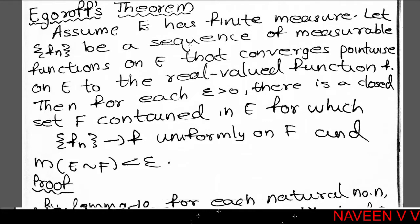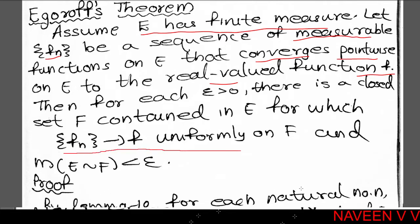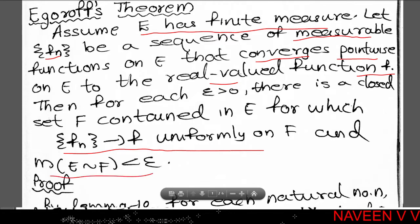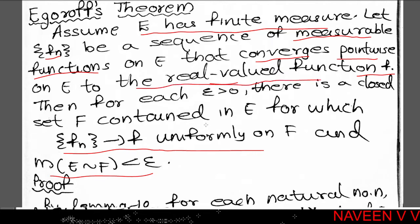Next, figure of Egoroff's theorem proof. The statement: assume E has finite measure. Let fn be a sequence of measurable functions on E that converges pointwise on E to the real-valued function f. Then for each epsilon greater than zero, there is a closed set F contained in E for which the sequence fn converges to f uniformly on F, and measure of E minus F is less than epsilon.